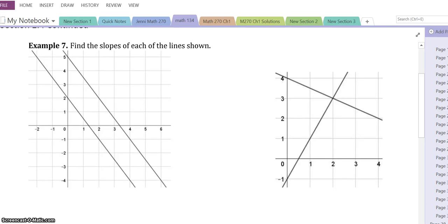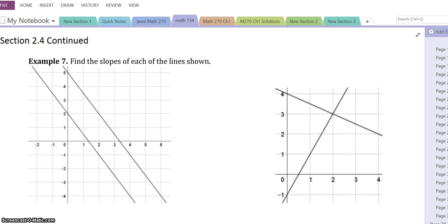Here is the last class notes video for section 2.4. Example 7. Example 7 is an example between parallel and perpendicular lines.